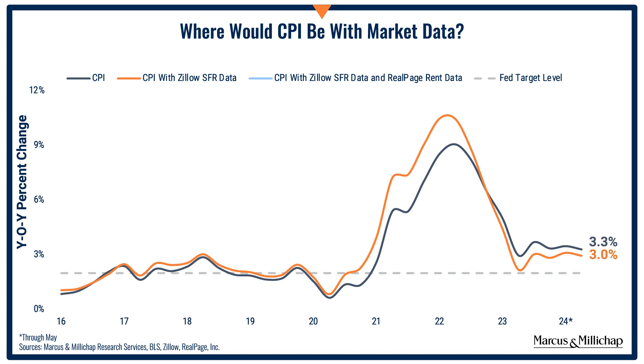If they also used more current data to calculate the rent of primary residence inflation, then the current CPI inflation reading would be about 2.6%. And if headline inflation were down to 2.6%, then we'd probably already be cutting rates.